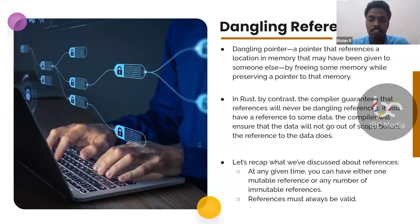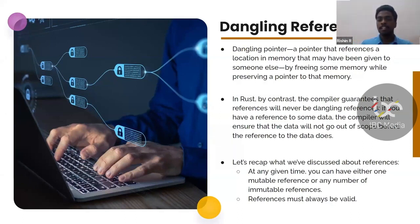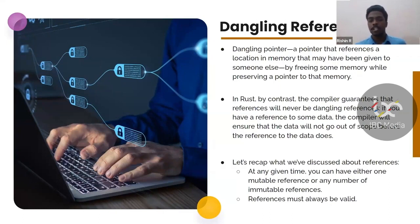This is usually a large problem in C or C++, and it is solved in Rust. By contrast, the Rust compiler guarantees that references will never be dangling, because if you have a reference to some data, the compiler will ensure that the data will not go out of scope before the reference does. A dangling reference is basically a reference pointing to nothing — for example, a pointer x pointing to value y in memory, but after y is cleared using a mutable reference, x is pointing to nothing. This scenario won't happen in Rust.